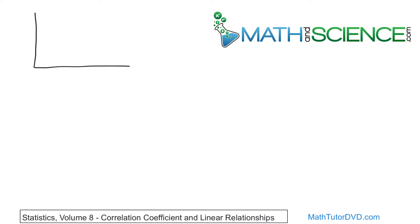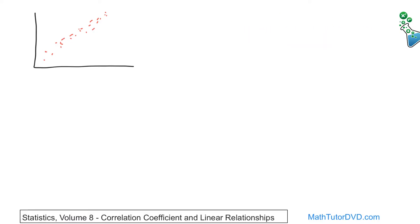Let's take a look at a couple of different scatter plots. The first one is going to have data that looks something like this — it's going to go up like this. You can see there's a linear relationship that goes up, and the points would be very close to a line if we were to pass a line through roughly the center point of those data points. So because of that, we say that this has a strong linear relationship, and we say it has a positive slope.